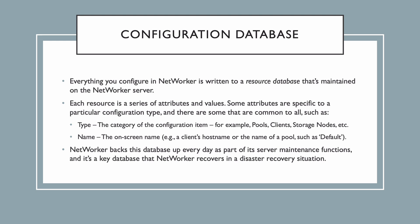A resource is a collection of attributes and values. There are a series of resource categories called resource types. You get resource types for pools, clients, storage nodes, devices, the networker server itself, and a host of other elements we haven't discussed yet.